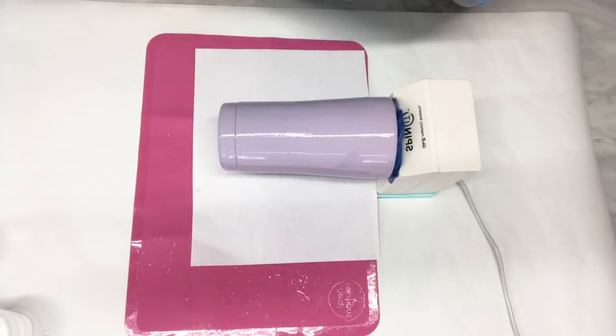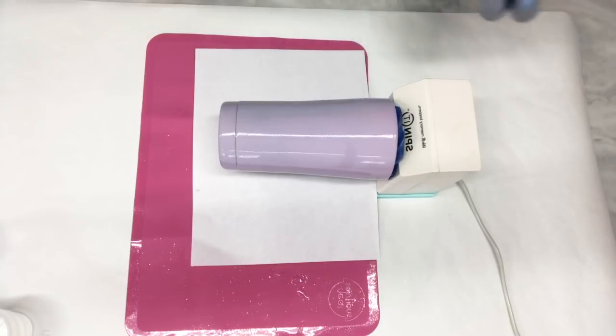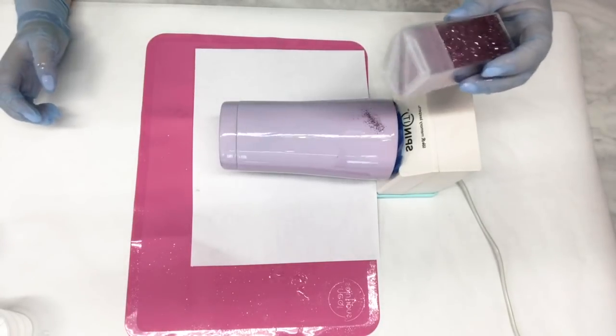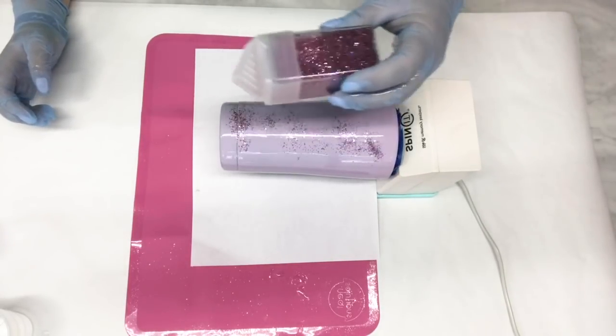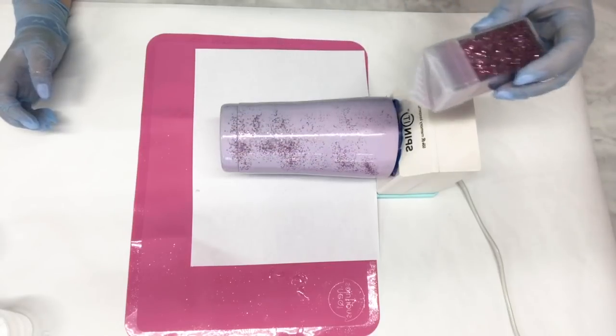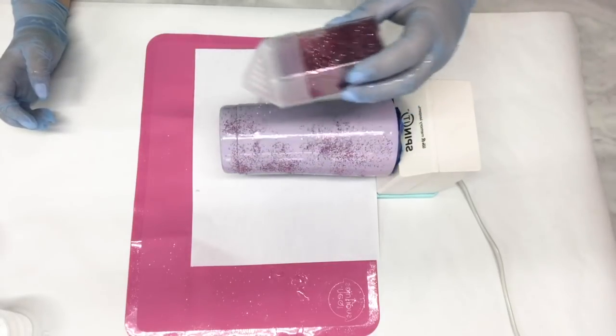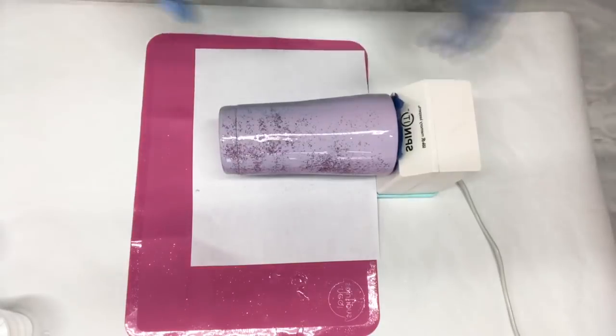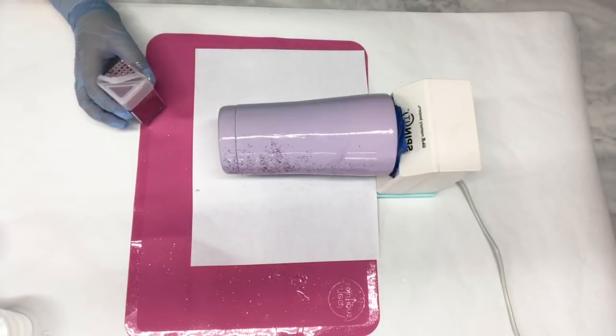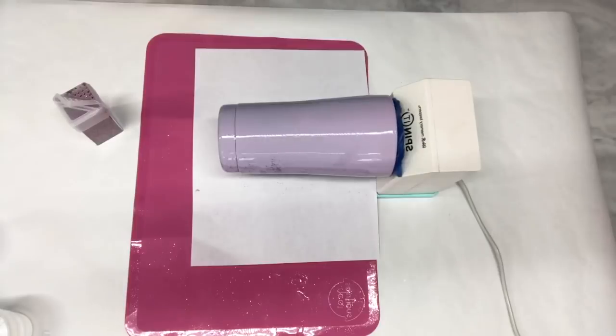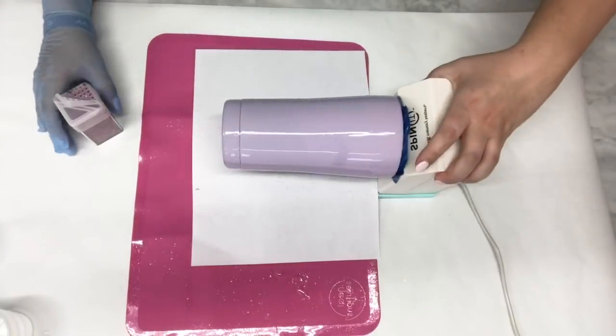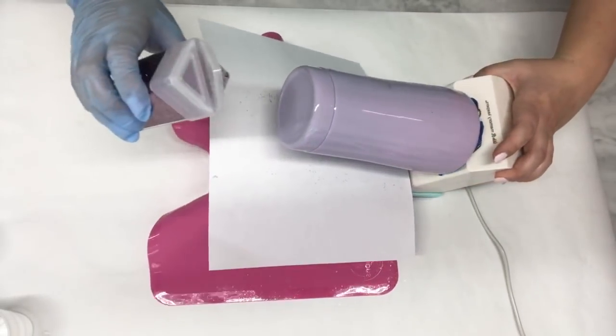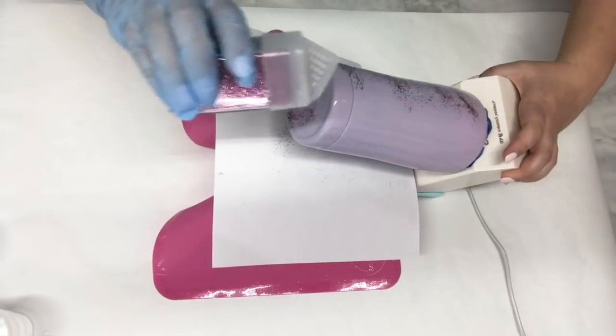I'll put another piece of paper down to catch all my glitter that I'm about to sprinkle on my cup. I'm so excited to use this Holly Molly glitter from Peachy Olive. You just want to start out with a super light sprinkle. The good thing about this spin tumbler turner is that it's light enough that you can just lift up and do the bottom.